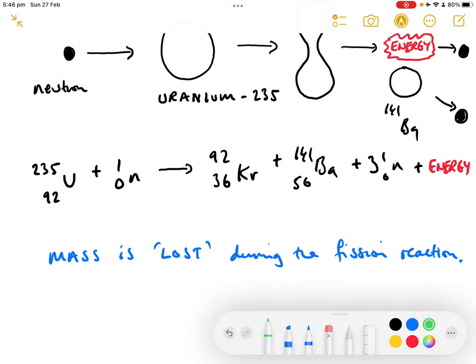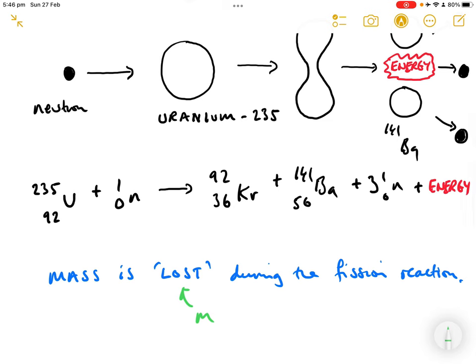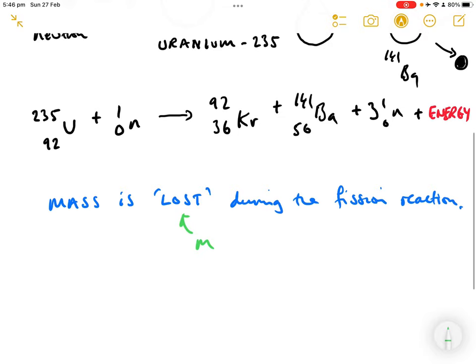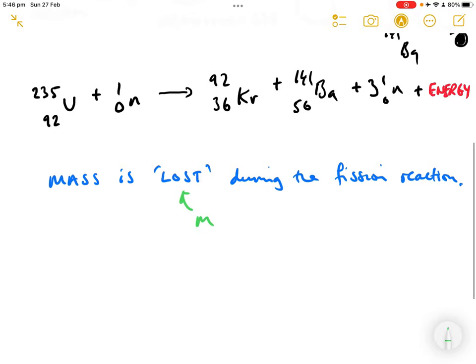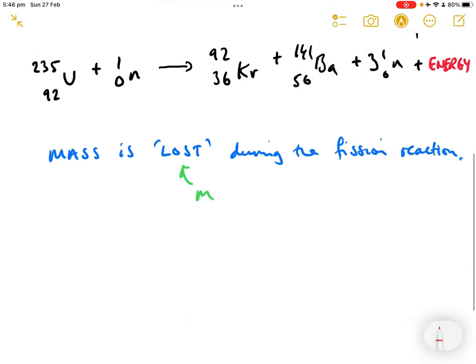The amount of mass that is lost is very small in any individual reaction, but because there are so many of these reactions taking place in even a gram of uranium-235, it adds up to quite a substantial amount of energy. Einstein showed that the lost mass actually is not lost, it's been converted into energy.